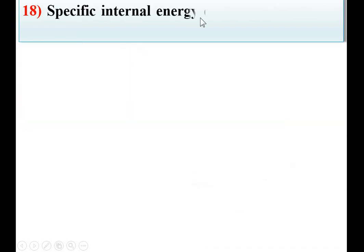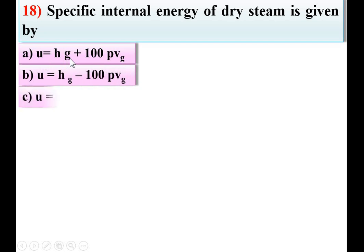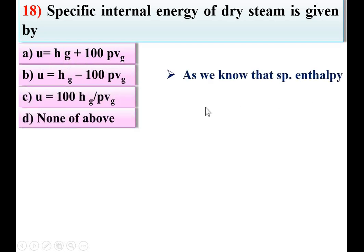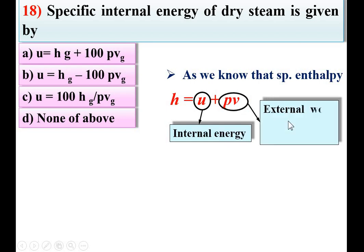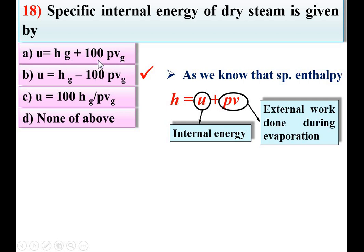Next: specific internal energy of dry steam is given by which option. We know that specific enthalpy H = U + PV, where U is the internal energy and PV is the flow work, also called external work done during evaporation. So the specific internal energy U = H − PV. B is the right answer.